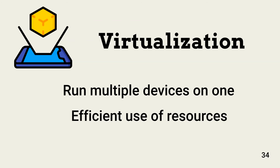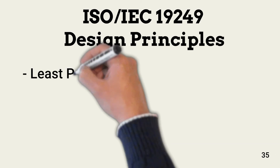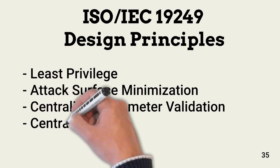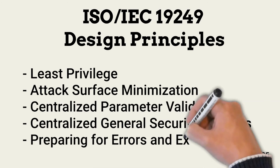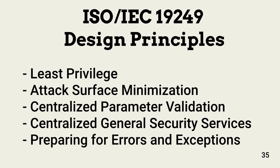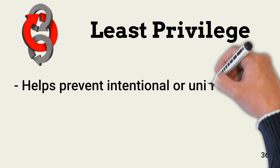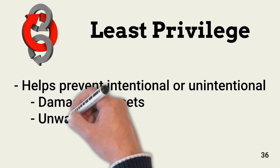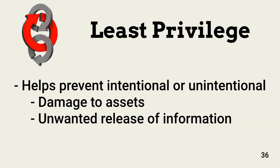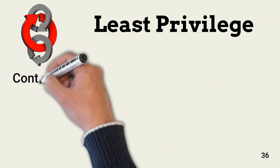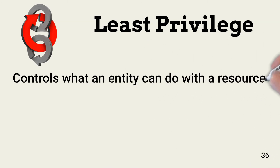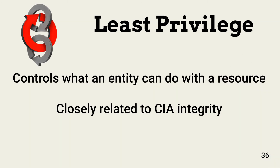The ISO design principles are: least privilege, attack surface minimization, centralized parameter validation, centralized general security services, and preparing for errors and exceptions. Least privilege is recommended in any conversation about securing information assets. It minimizes opportunities for damaging assets or revealing data, either accidentally or intentionally, and is closely related to integrity. Least privilege only allows an entity to perform actions on a resource absolutely needed to perform role-related business tasks. This applies to users, applications, and network services.